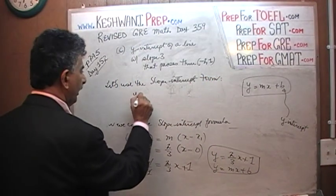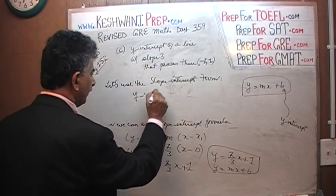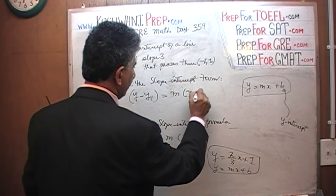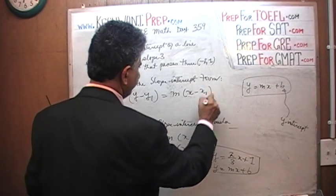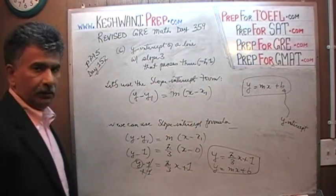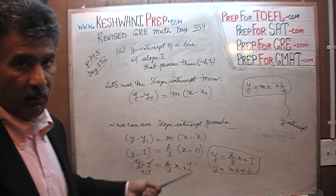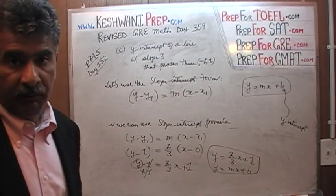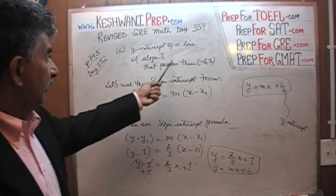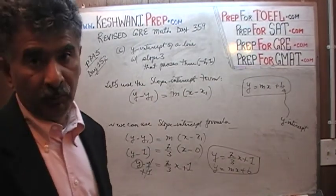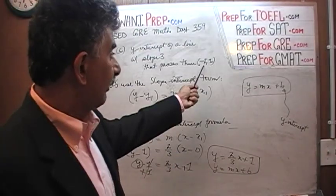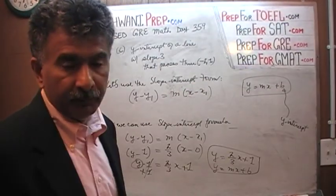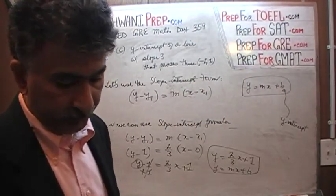In this case, the distinction between (X1, Y1) and (X2, Y2) is a moot point because we only have coordinates for one point. So (-2, 1) is our (X1, Y1) and there is no second point.